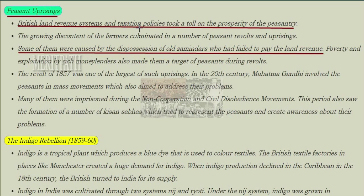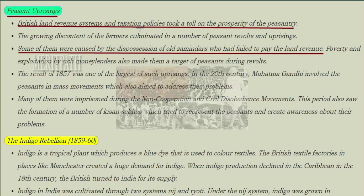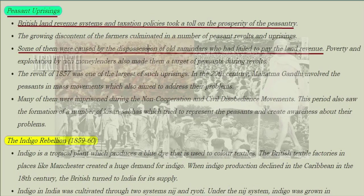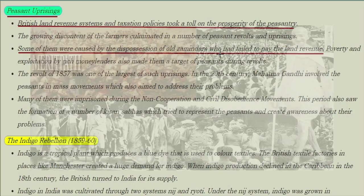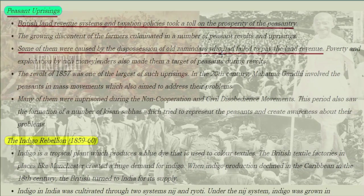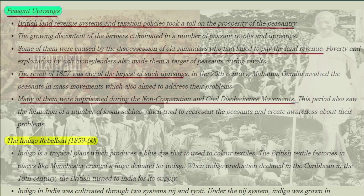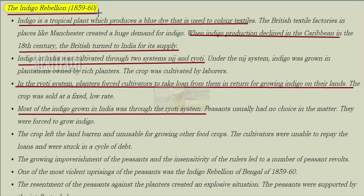Peasant uprisings: British land revenue systems and taxation policies took a toll on the prosperity of the peasantry. The growing discontent of farmers culminated in a number of peasant revolts and uprisings. Some were caused by the dispossession of old zamindars who had failed to pay land revenue. Poverty and exploitation by rich moneylenders also made them targets during revolts. The revolt of 1857 was one of the largest uprisings. In the 20th century, Mahatma Gandhi involved peasants in mass movements to address their problems. Many were imprisoned during the non-cooperation and civil disobedience movements. This period also saw the formation of Kisan Sabhas which tried to represent the peasants.